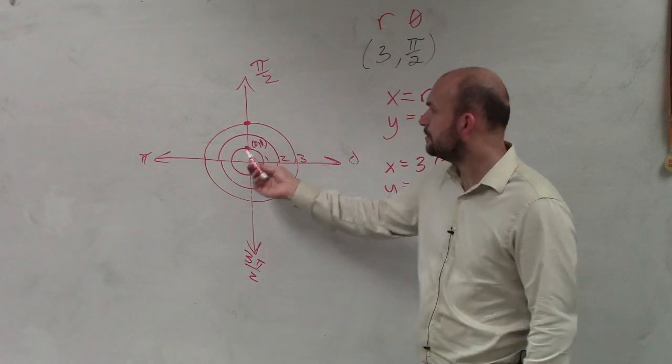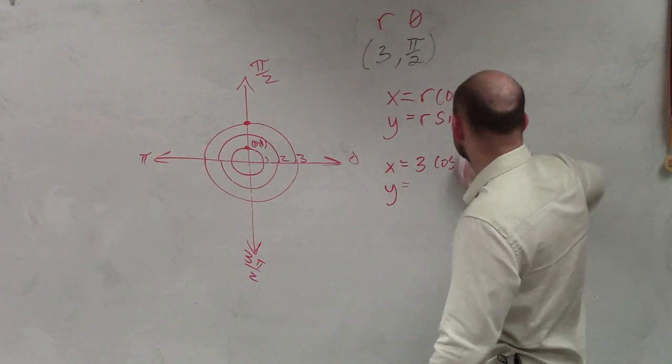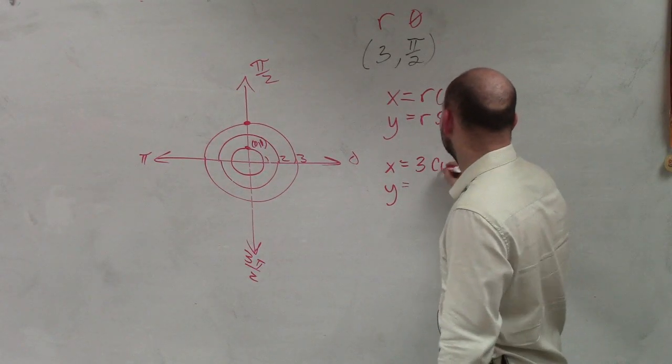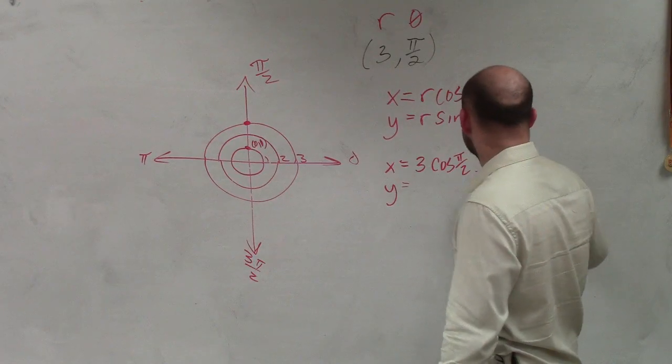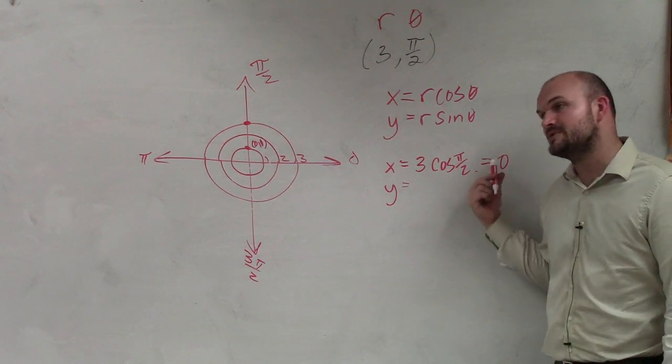The y-coordinate, whatever the y, I'm sorry, shoot. Cosine of theta, cosine of pi halves, guys, is 0, right? Thank you for not saying anything. Cosine of pi halves is 0. 0 times 3 is always 0.